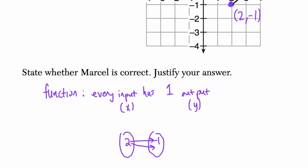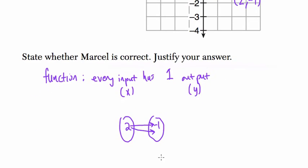goes to 3. So this violates what a function is. Here, our input, 2, goes to both negative 1 and 3, so it's not a function.